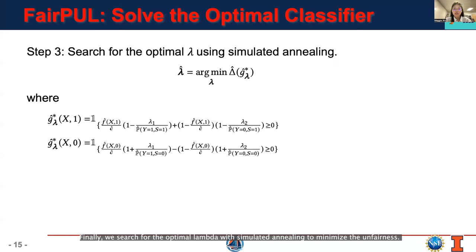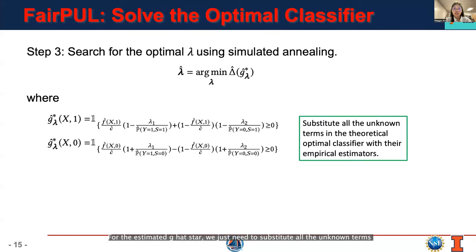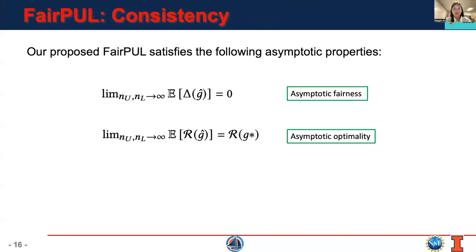Finally, we search for the optimal lambda with simulated annealing to minimize the unfairness. For the estimated Ĝ*, we just need to substitute all the unknown terms in the theoretical optimal classifier with their empirical estimators. Our proposed fair PUL enjoys consistency. It enjoys both asymptotic fairness and asymptotic optimality.